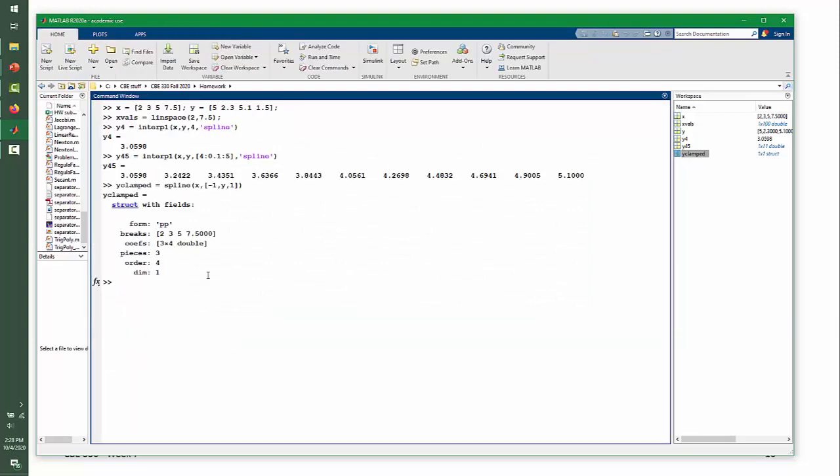We can now use the ppval command to calculate values of y corresponding to any input values for x. So we've already created a vector of x values that contains 100 data points between the first and last values of our data. The ppval command takes a piecewise polynomial structure and a vector of x values as the input arguments and produces the corresponding vector of y values.